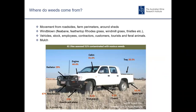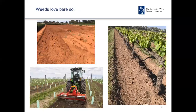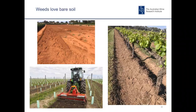Where do weeds come from? They are gate crashers - they just blow in from roadsides, farm perimeters, and around sheds. They get carried in by wind, vehicles, stock, employees, contractors, customers, tourists, feral animals, and can also be imported in mulch. There's a vehicle image here which shows where noxious weeds were actually found within a vehicle.